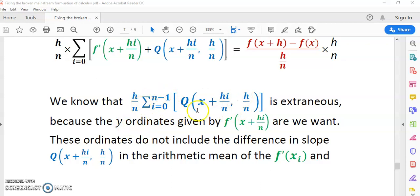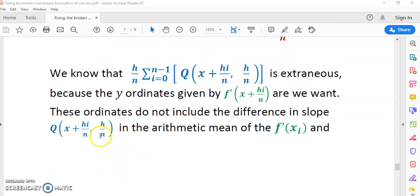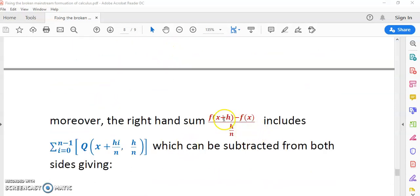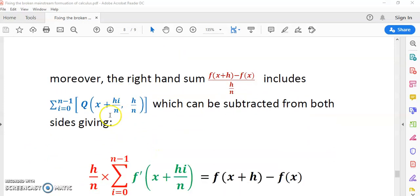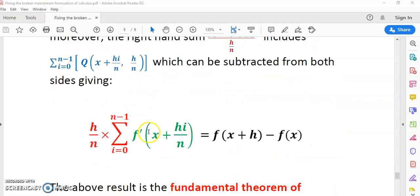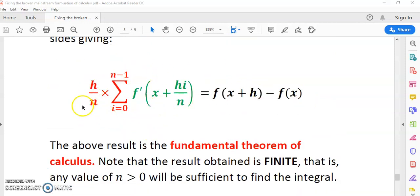But before we get to that, we want to know what happens. We know that this sum here is extraneous because the y-ordinate given by this particular ordinate of the function f' is what we want. We do not want this extra difference in slope, right? Because that's what it really is - it's just the difference in slope. The right-hand sum, which is this, includes this extraneous difference, and it can be subtracted from both sides to get the fundamental theorem of calculus written like that.